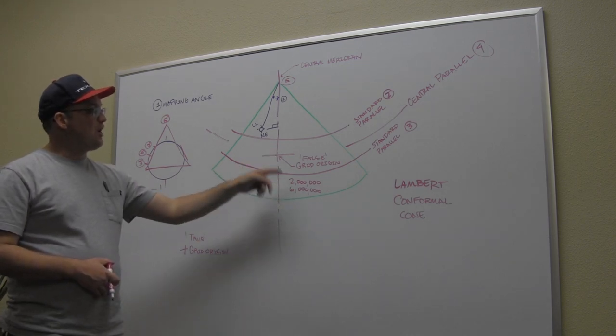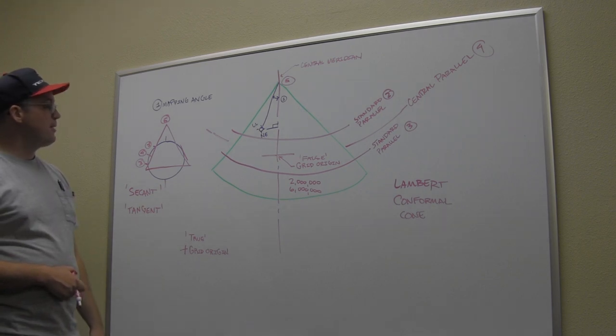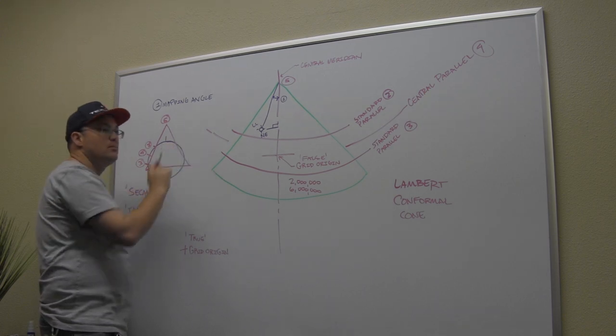Here's a really helpful rule of thumb for you CAD users. How can you tell if you're in state plane coordinates? More than likely, two by six. That's how you know. So that's how far, this number is how far the false grid origin is from the true grid origin.